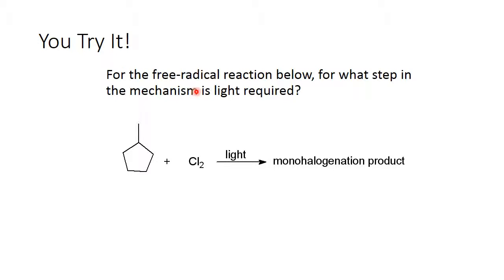In this free radical reaction, think through the mechanism and identify which step requires light. In this reaction, light breaks the bond in chlorine — that is the initiation reaction, so that is the mechanism step that requires light. The remaining steps are propagation and termination, and they occur whether or not there's light. They just continue or terminate the reaction.